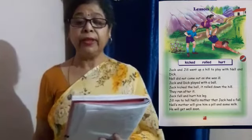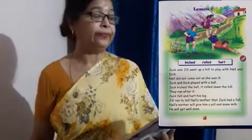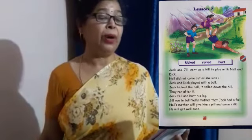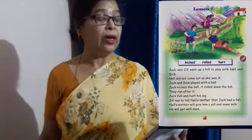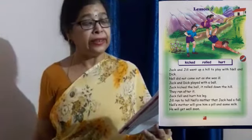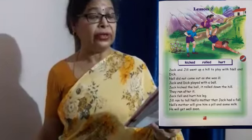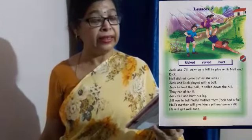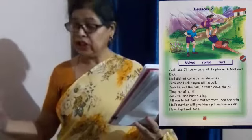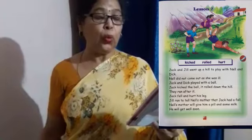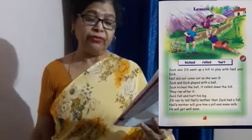Jack and Jill went up a hill to play with Nell and Dick. Nell did not come out as she was ill. Jack and Dick played with a ball. Jack kicked the ball. It rolled down the hill. They ran after it. Jack fell and hurt his leg. Jill ran to tell Nell's mother that Jack had a fall. Nell's mother will give him a pill and some milk.